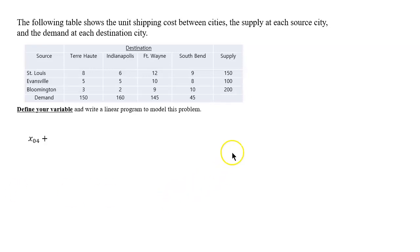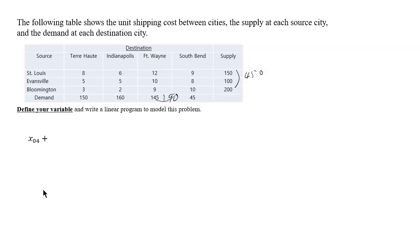When these types of questions are given, you should always figure out the balance between the supply and the demand. The supply here is 150, 100, 200, so they add up to 450. The demand is 190, 145 plus 45 is 190, adding 160 gives you 350, adding 150 gives you the demand total as 500. So that means there is 50 units of difference between the supply and demand.